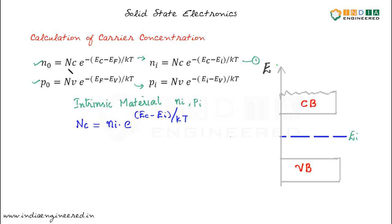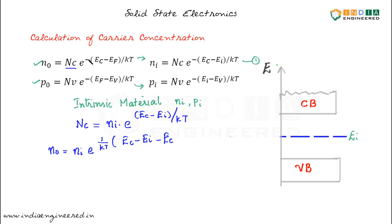This Nc we can substitute in this equation. So we will get N0 equal to — instead of Nc, we will write this expression that is Ni into E power. Let us take 1 by Kt as common. So we have Ec minus Ei, and here we have minus Ec and plus Ef. This minus and minus will become plus, and the Ec terms will cancel. We will have N0 equal to Ni into E power Ef minus Ei by Kt.